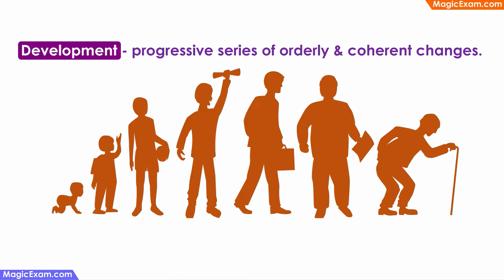The first thing we need to understand is what are these principles of development and where did they come from — how did they evolve? In the previous video, we studied that development is a progressive series of orderly and coherent changes. That is, there is a progressive series of steps that happen in any kind of development, and there is a specific order followed, and the changes that are happening are coherent.